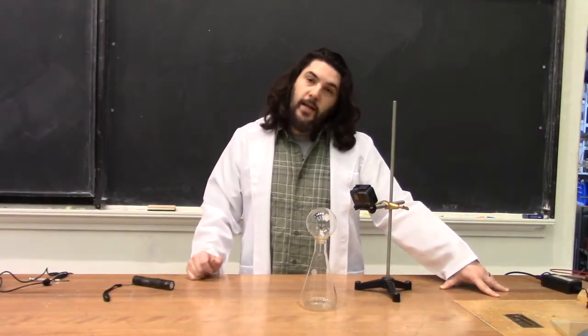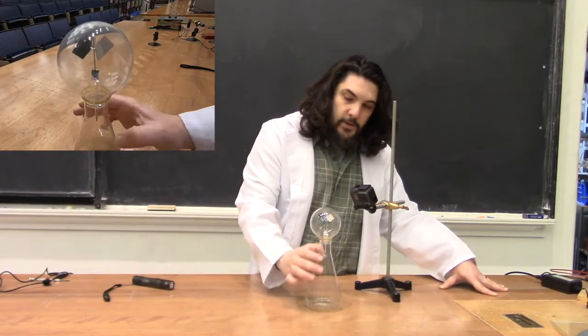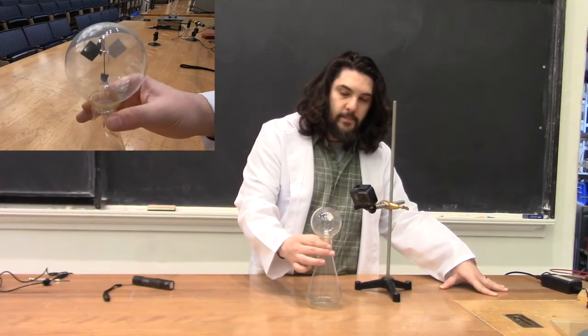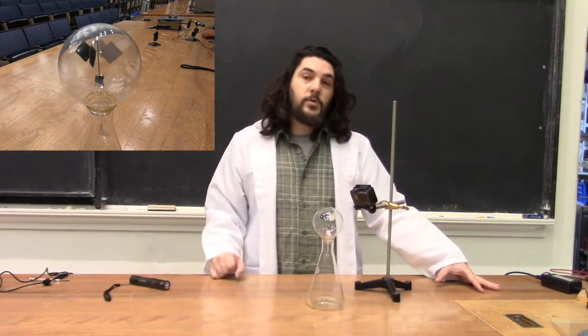So instead we're going to look at this Crookes radiometer. It has four petals with alternate black and white sides. Black, you might recall, is a color that absorbs light.